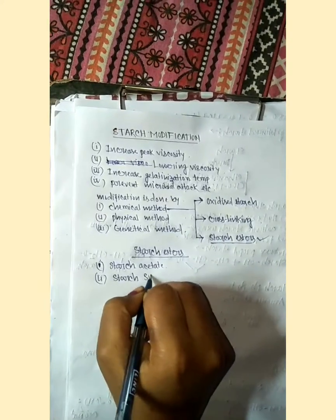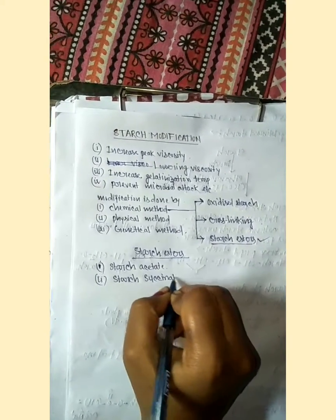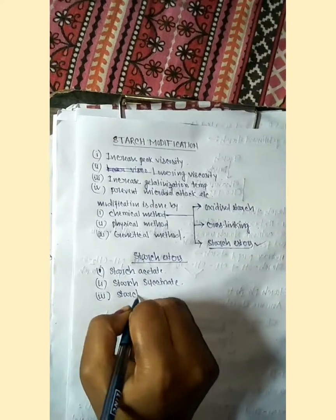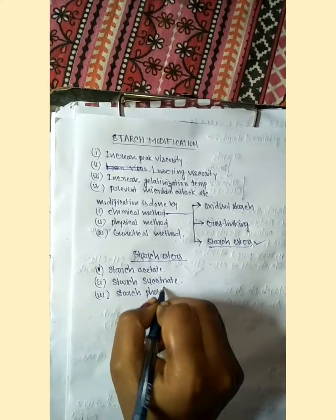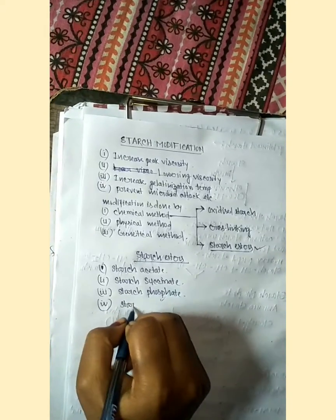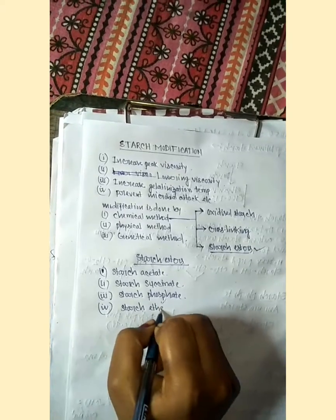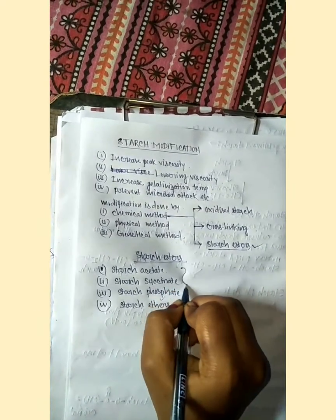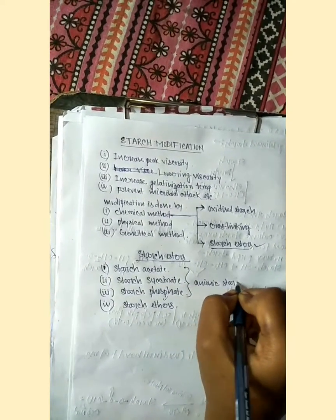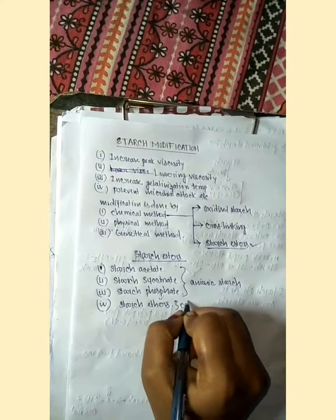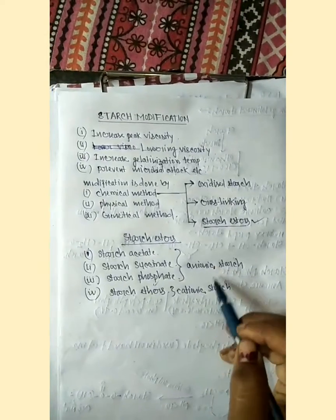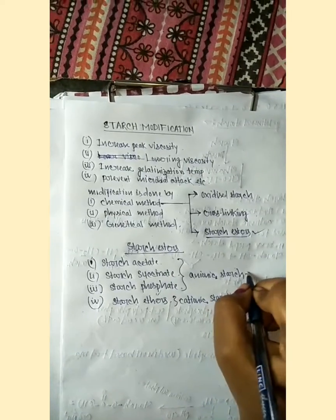The three types are: starch succinate, starch phosphate, and starch acetate. These three are anionic starch. There is also cationic starch. The only difference between these two is that anionic starch is used in food industry.